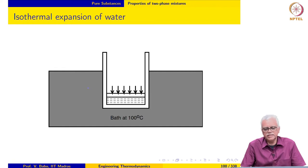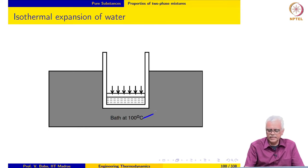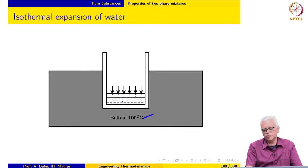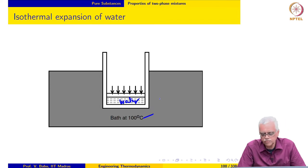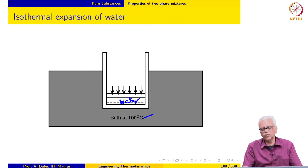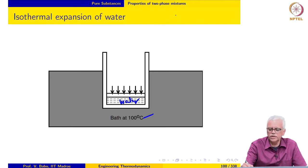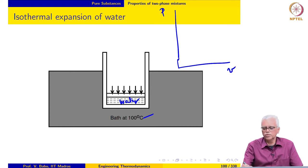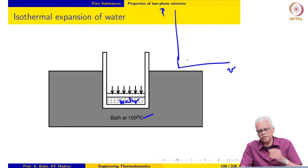Let us start with a simple experiment — the so-called Andrews experiment. We have a bath maintained at 100 degrees Celsius and a piston-cylinder mechanism immersed in the bath. The contents of the cylinder are water, and we start with liquid water. What we plan to do is conduct this experiment and draw the isotherm corresponding to 100 degrees Celsius on a PV diagram, where the x-axis is specific volume and the y-axis is pressure.